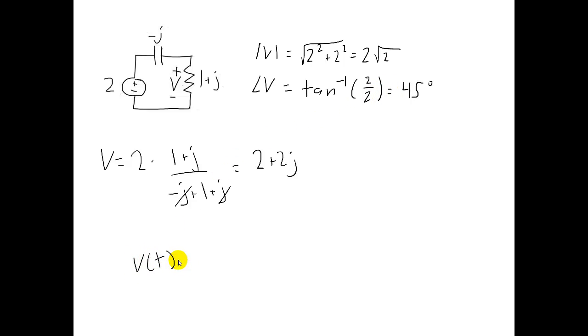The time domain expression for the voltage across the inductor is therefore 2 root 2 cosine 2T plus 45 degrees. Remember, the frequency 2 was given to us initially.